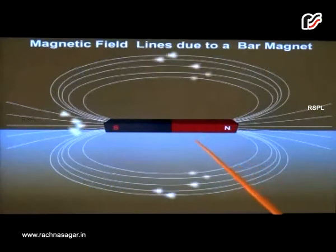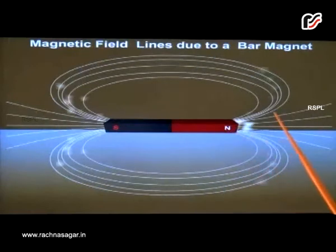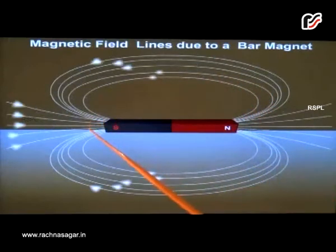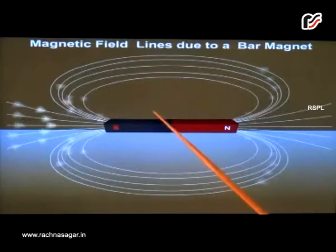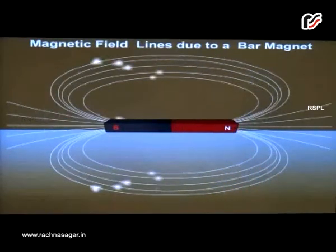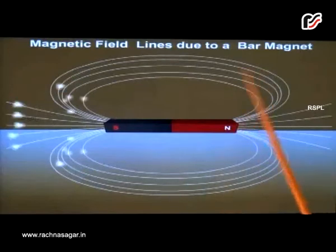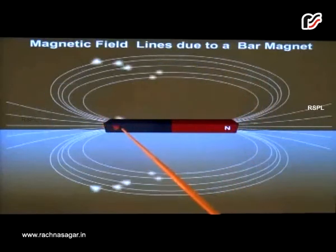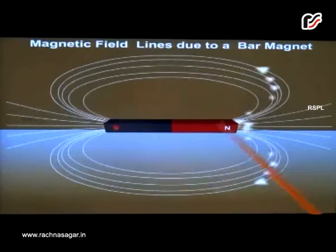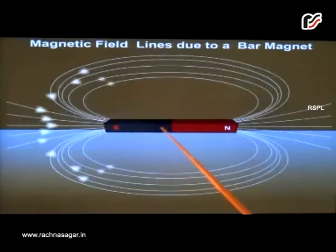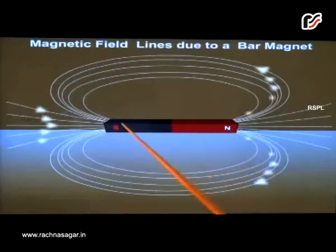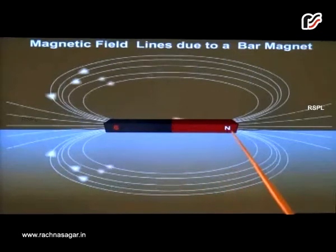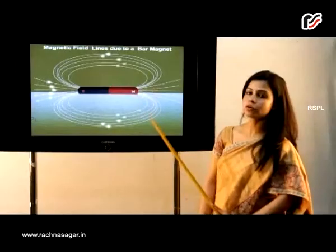We see the magnetic field lines emerging from the north pole and moving towards the south pole of the magnet. Therefore, the direction of the magnetic field outside the bar magnet is given as emerging from the north pole and merging in the south pole. Whereas inside the bar magnet, we observe parallel lines of magnetic field which travel from the south pole to the north pole.